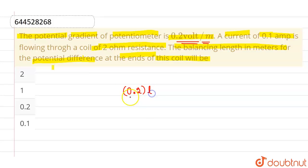Then for length L, this will be 0.2 into L. And that should be equals to the potential difference created by 0.1 current across 2 ohm resistance. So, from Ohm's law, which is V equals to IR, potential difference will be current into resistance. So, current is 0.1 ampere and resistance is 2 ohm.